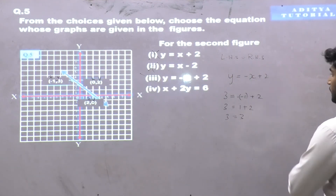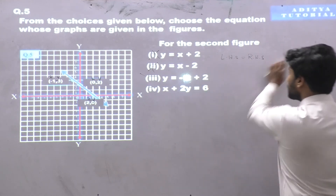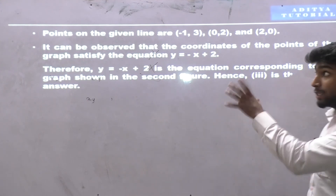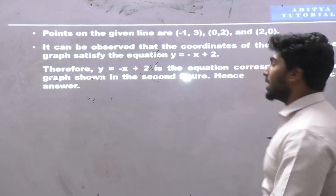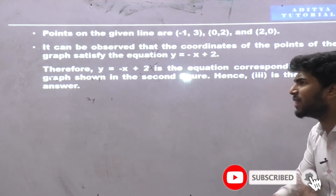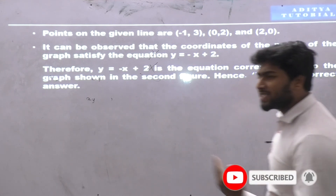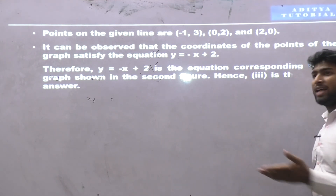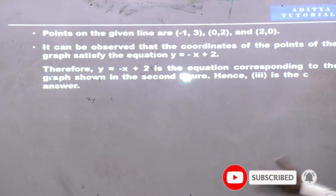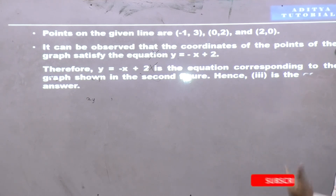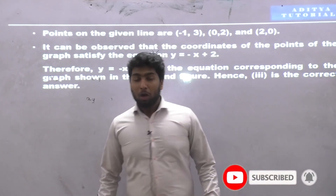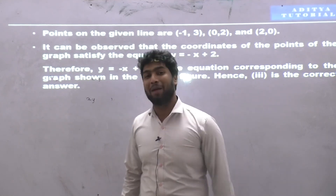Let me show you how to write the answer. Points on the given line are (-1,3), (0,2), and (2,0). It can be observed that these points satisfy the equation y is equal to minus x plus 2. Therefore, y equals minus x plus 2 is the equation corresponding to the graph shown in the second figure. If you like it, do share and subscribe. Thank you.